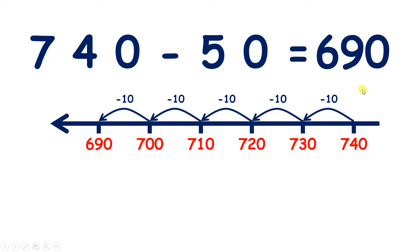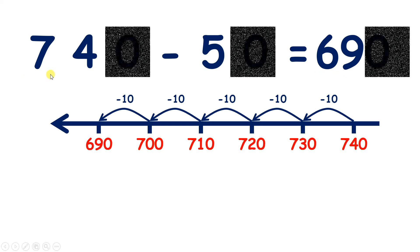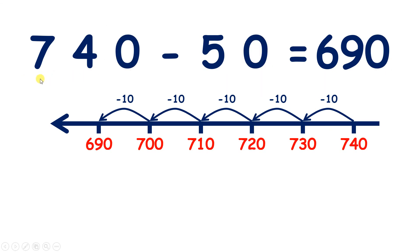But we could probably do even this question without a number line, because if we know, or if we can quickly work out that 74 minus 5 is 69, we know that 74 tens minus 5 tens is 69 tens. And 74 tens is the same as 740, 5 tens is the same as 50, and 69 tens is the same as 690.